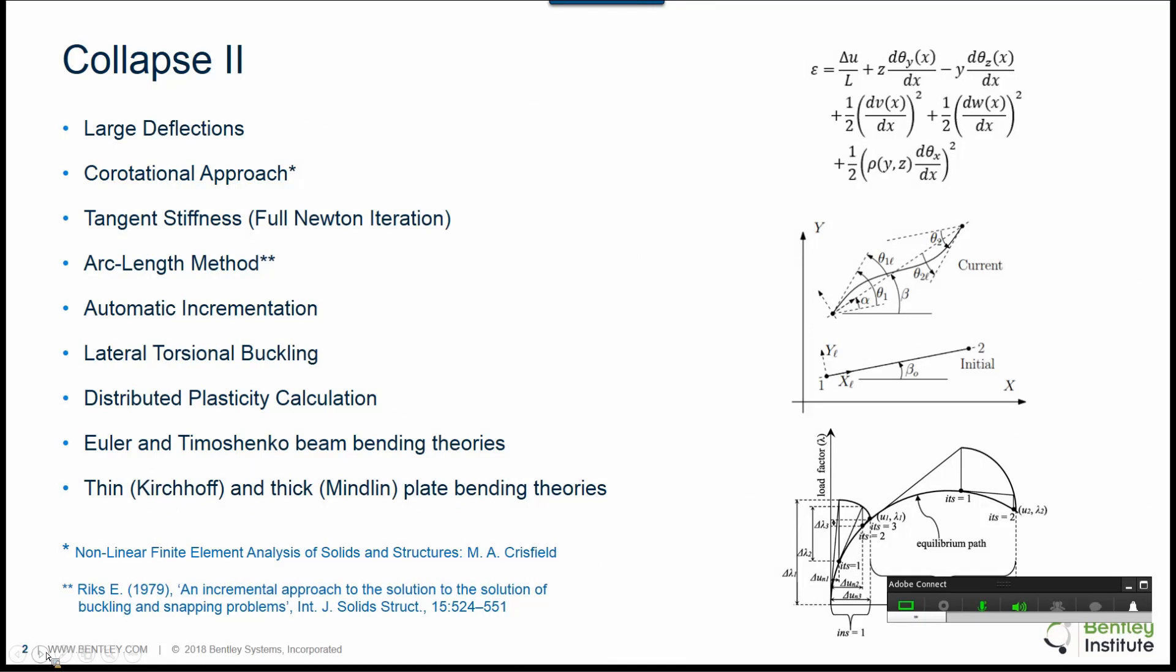A full tangent stiffness iterative approach is used for the solution of the nonlinear equation. An arc length iterative approach is used to predict unloading behavior resulting from member buckling or overall failure of the structure or any joint failure. An automatic incrementation scheme is used to automatically reduce the load increment size in case where convergence becomes an issue.